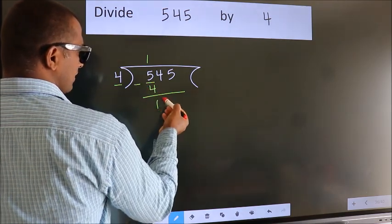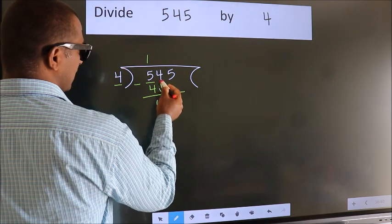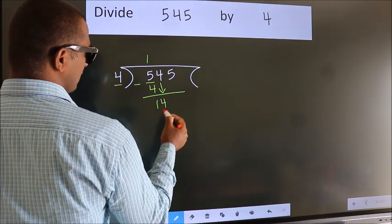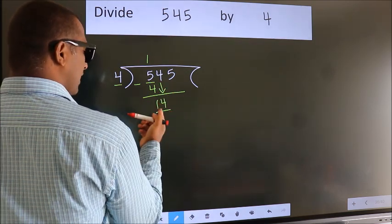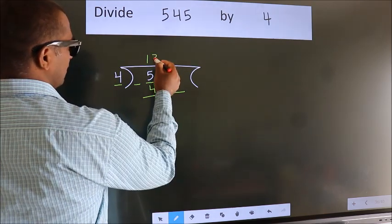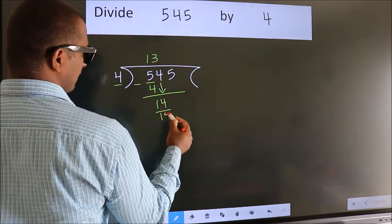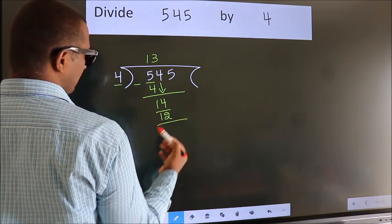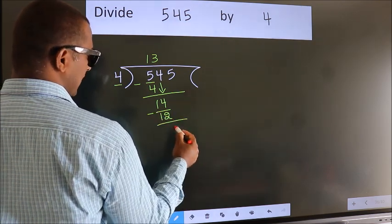After this, bring down the beside number. So, 4 down. So, 14. A number close to 14 in 4 table is 4 3s 12. Now, we subtract. We get 2.